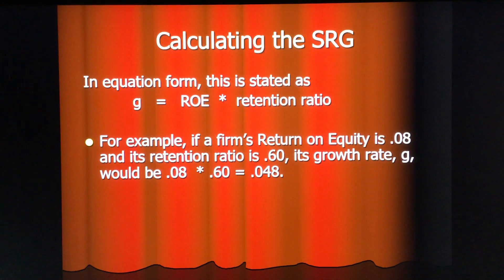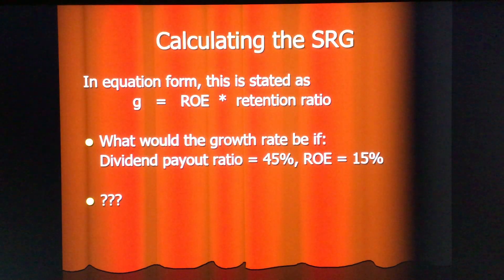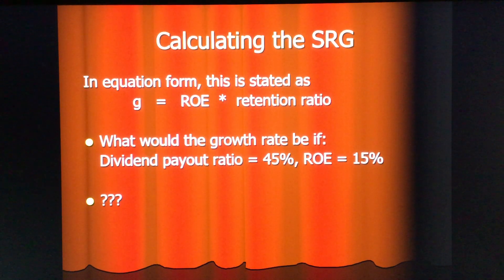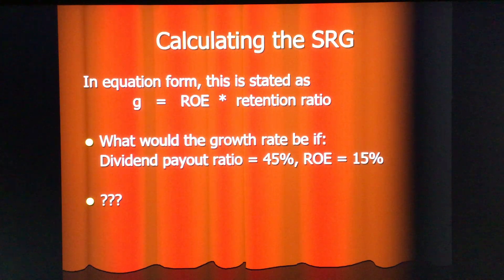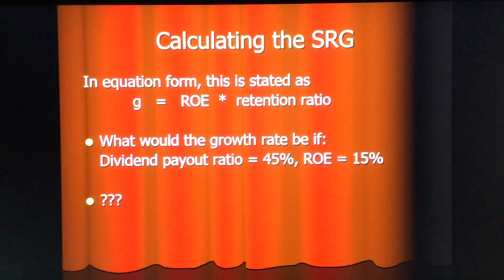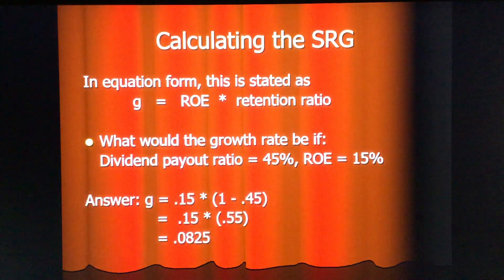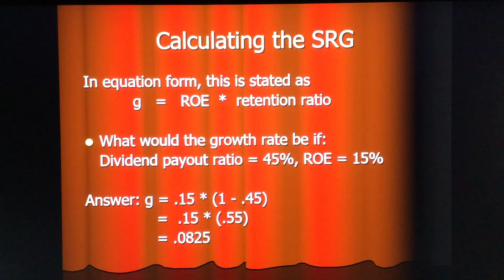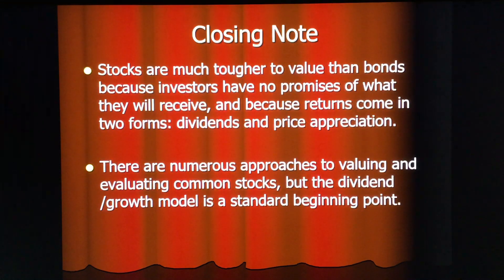For example, if a firm's ROE is 8% and its retention ratio is 60%, the growth rate G would be 8% × 60% = 4.8%. If the dividend payout ratio is 45% and ROE is 15%, then the retention ratio is 55%, so G = 15% × 55% = 8.25%. That is your sustainable rate of growth.